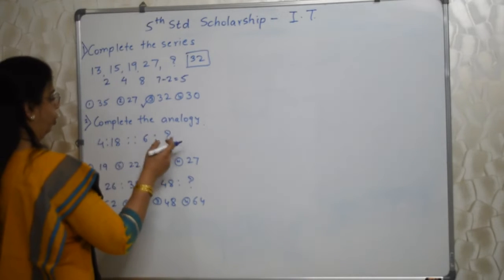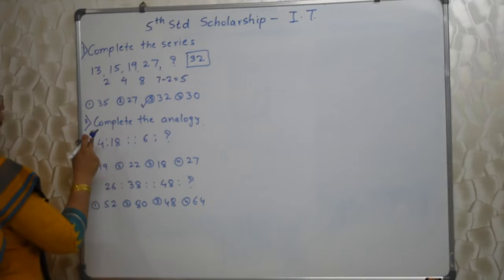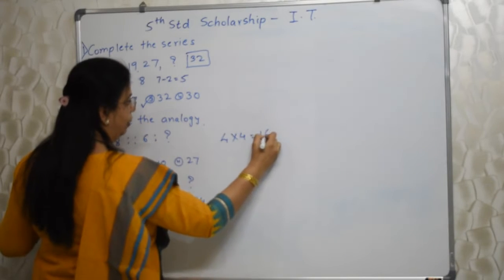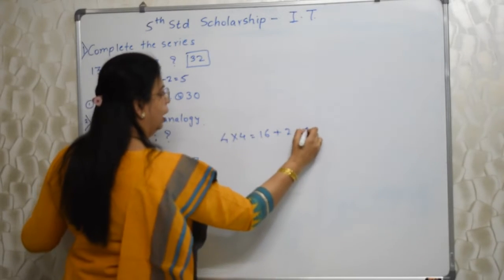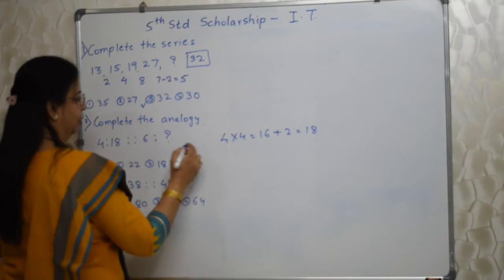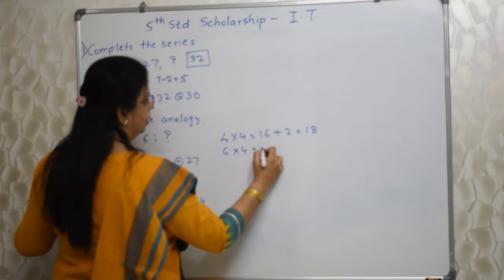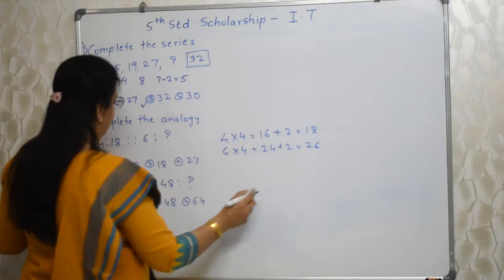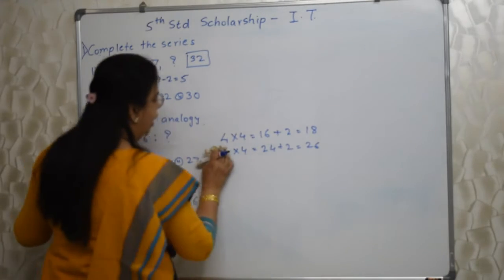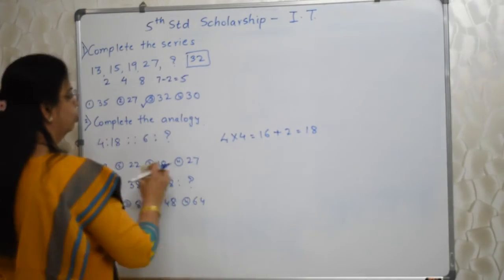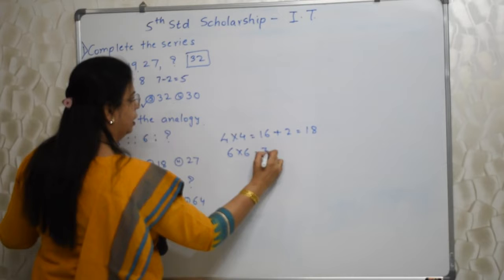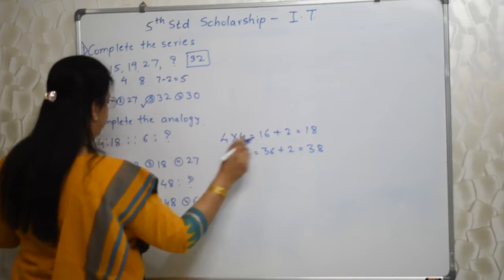4 is to 18. How can I reach 18 with the help of 4? I can do 4 into 4, which gives 16, then add 2 to get 18 — very rational. So applying the same thing: 6 into 4 is 24 plus 2 is 26. But 26 is not in the options. Then I try 6 into 6, which is 36 plus 2 is 38. That's not there either. So we need to try something else.